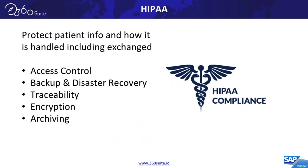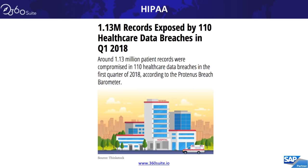Next up: healthcare — HIPAA. Protecting patient data, personal information, and how it's handled, including exchanging information between healthcare providers. The key BI regulatory topics here are access control, backup and disaster recovery, traceability, encryption, and archiving. We want to focus on how to ensure document security and access control, and also archiving instances.